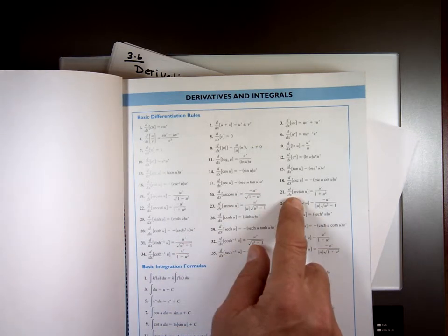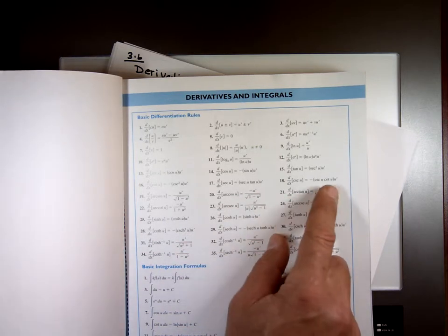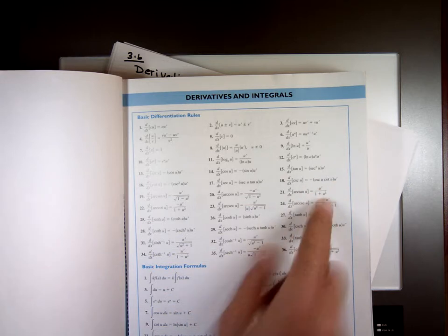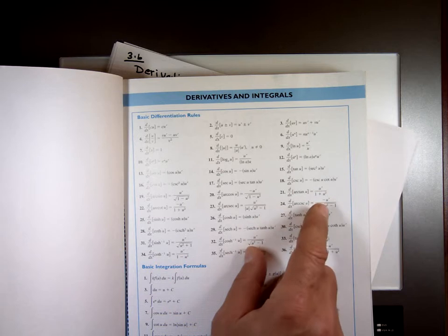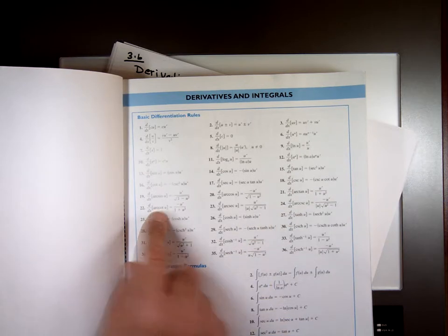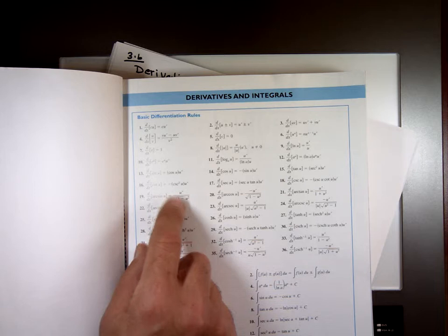Arc tangent of u, the derivative is u prime over 1 plus u squared. The derivative of arc cotangent of u, just like arc tangent, again with the exception, the top is negative.